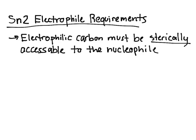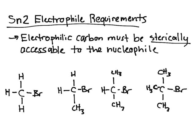I think it would be better if I explained it using an example, so let me draw something out. Below, I've drawn four different molecules. The main difference between all of them is the number of methyl groups, or CH3s, attached to the middle carbon. I'll draw the electrophilic carbons in red — the red carbons are the electrophilic carbons that the nucleophile is going to attack.